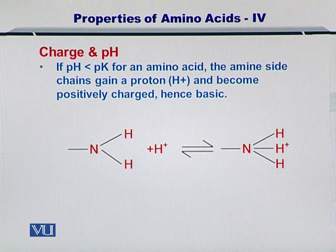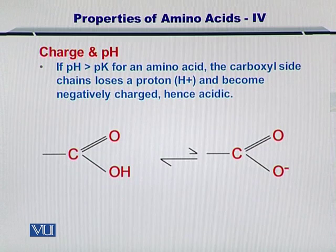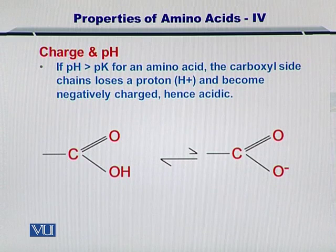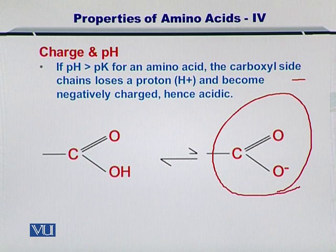Dear students, what if the case is reversed? If pH is greater than pK for an amino acid, the carboxyl side chain loses a proton. Upon losing a proton, the carboxyl group becomes negatively charged and hence acidic. As shown here, the overall charge of the carboxyl group is negative, and this is only for a pH that is greater than the pK value.